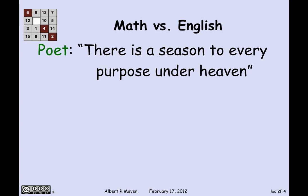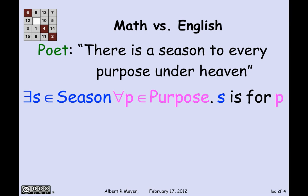Let's look at another example of the same kind. The poet says: there is a season to every purpose under heaven — a variant of a biblical phrase. The literal translation would be: there exists an S that's a season, such that for every P that's a purpose, S is for P.